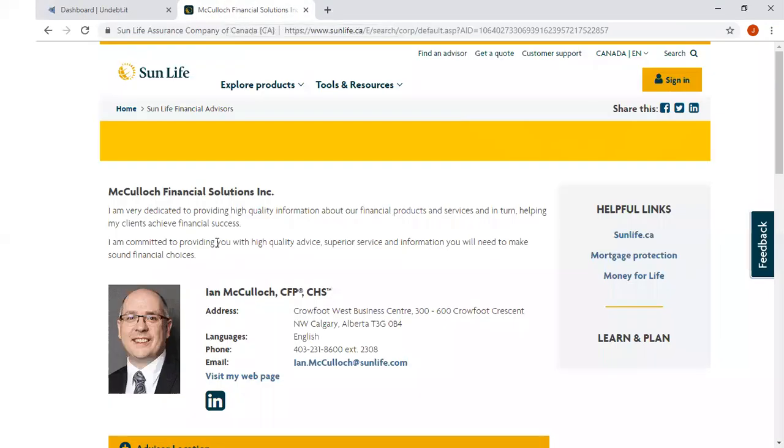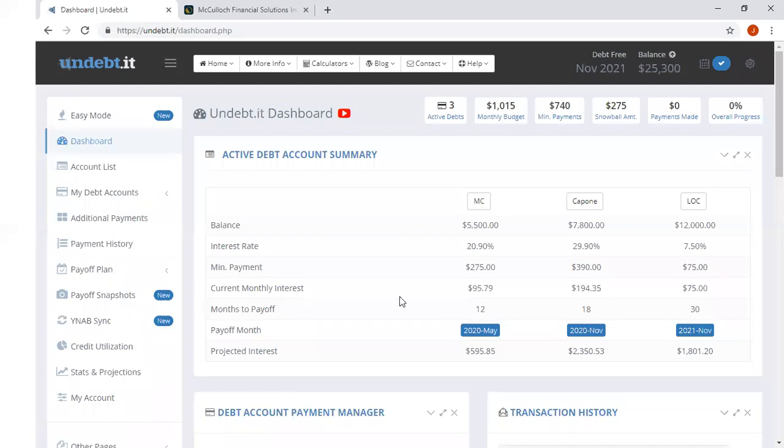You can play around with this with Undebt.it. I want to give props as well, it's actually Ian McCullough right here. Ian is a financial advisor, he's based in Calgary. He does a lot of work in the area kind of northwest of Calgary, Cochrane area primarily. Ian does a lot of work with clients who have debt issues, and he was the one who actually introduced me to Undebt.it. Pretty slick tool.